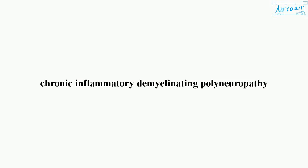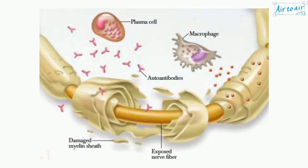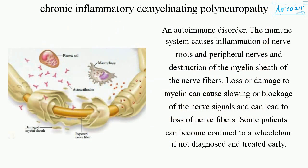Chronic inflammatory demyelinating polyneuropathy is an autoimmune disorder. The immune system causes inflammation of nerve roots and peripheral nerves and destruction of the myelin sheath of the nerve fibers. Loss or damage to myelin can cause slowing or blockage of the nerve signals and can lead to loss of nerve fibers.